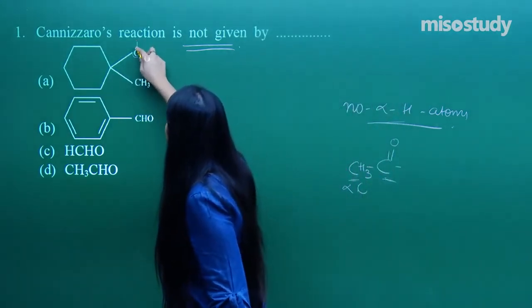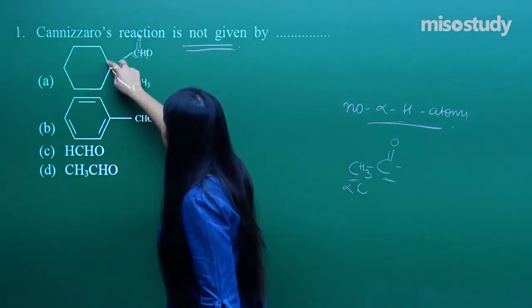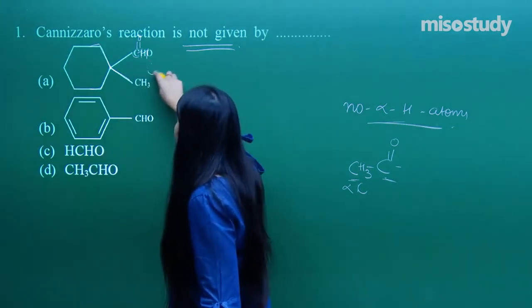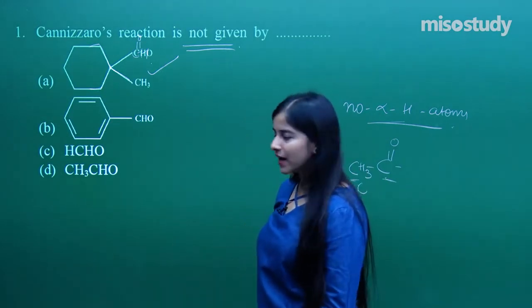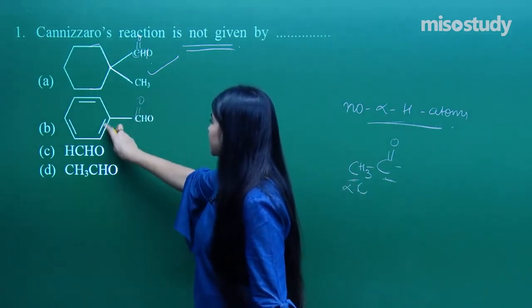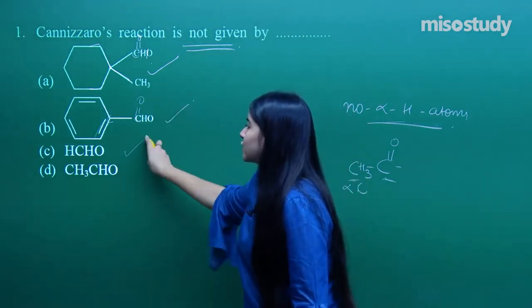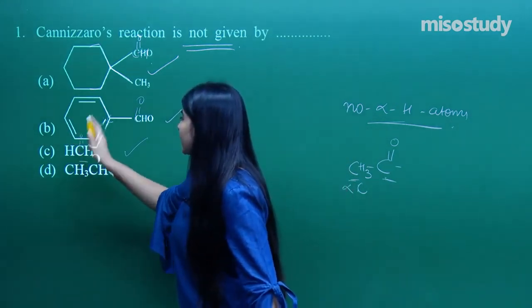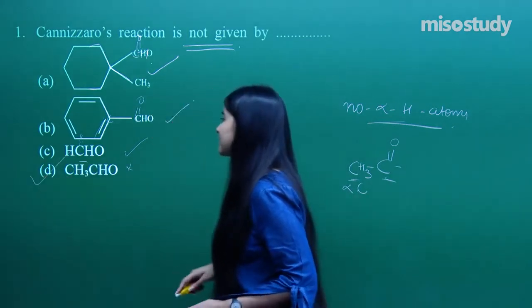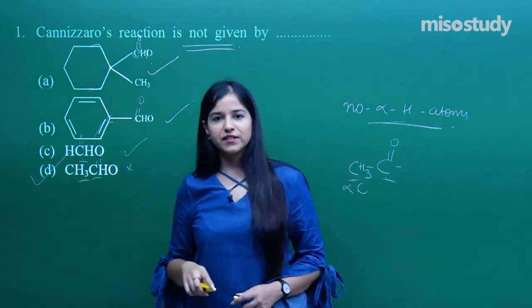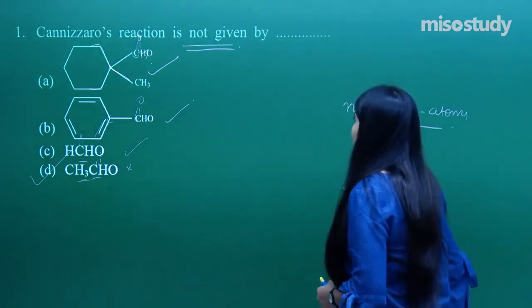Looking at the first option: the concerned carbonyl carbon and the adjacent carbon has this group, this group, and a CH₃ — no hydrogen present, so this would give the Cannizzaro reaction. Next, benzaldehyde: the adjacent carbon is involved with the ring and two double bonds, no hydrogen present, so it also gives Cannizzaro. HCHO (formaldehyde) obviously gives it because there is no adjacent carbon at all. The answer is acetaldehyde (ethanal), because it has an adjacent CH₃ group with alpha hydrogens, so it will NOT give the Cannizzaro reaction.